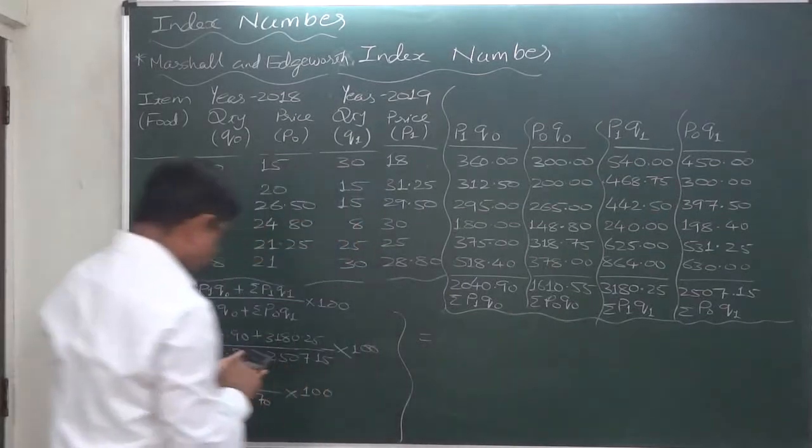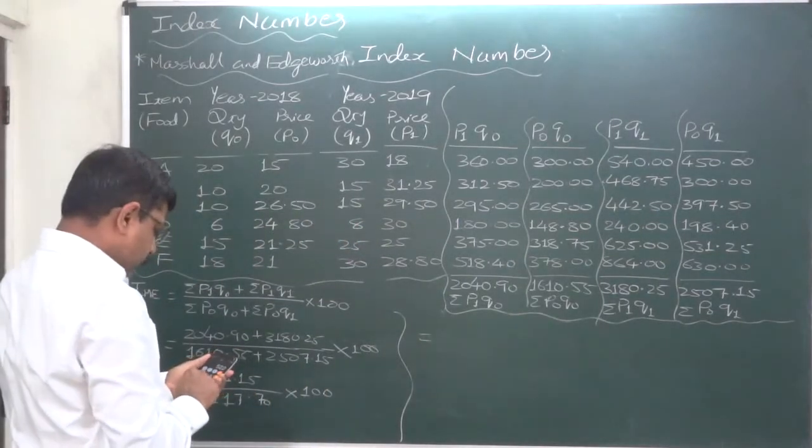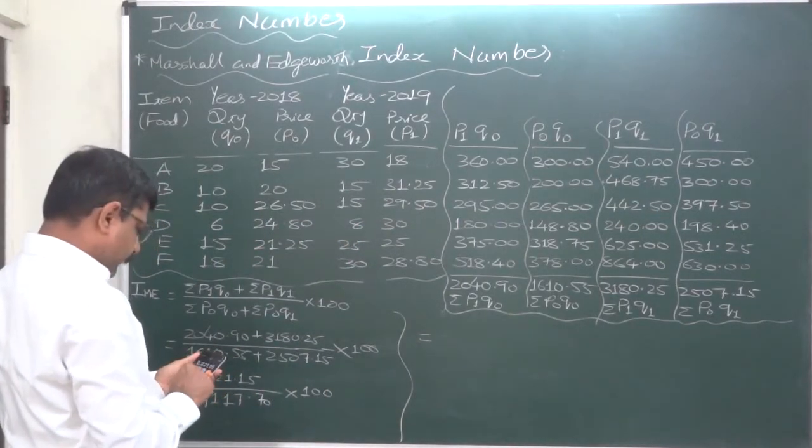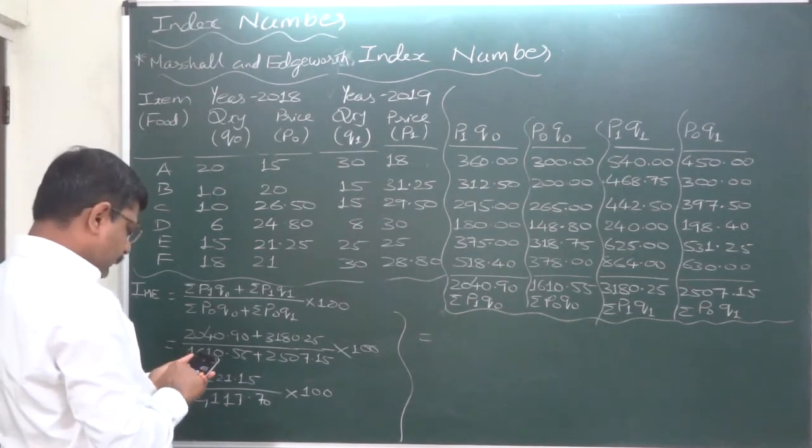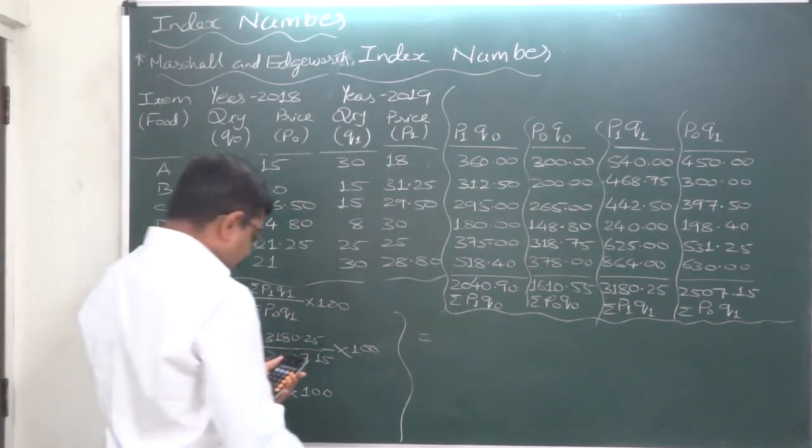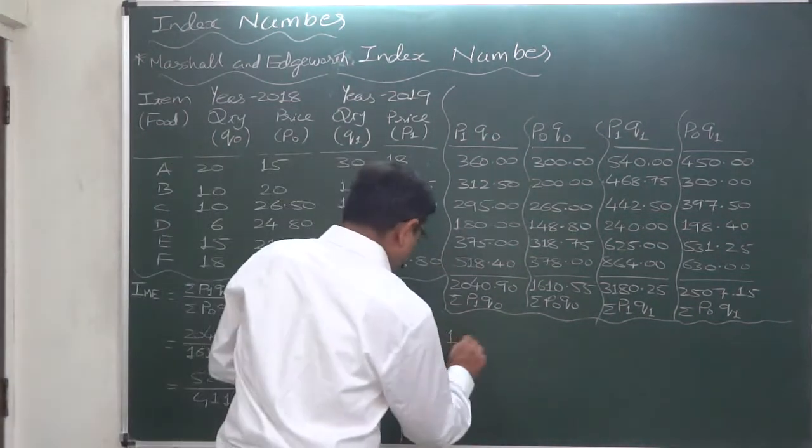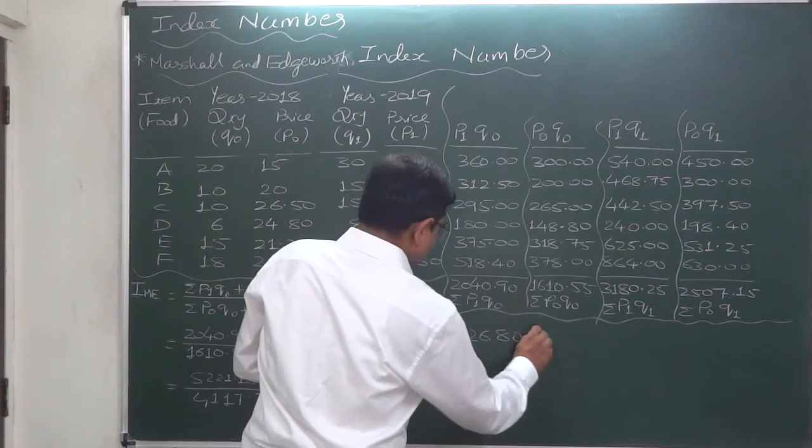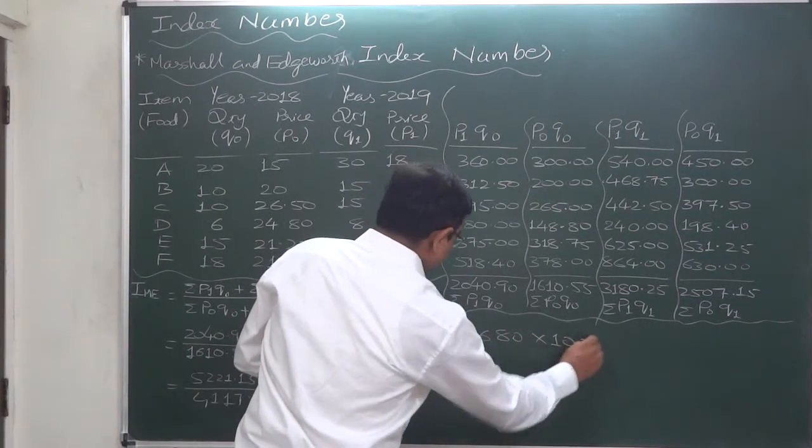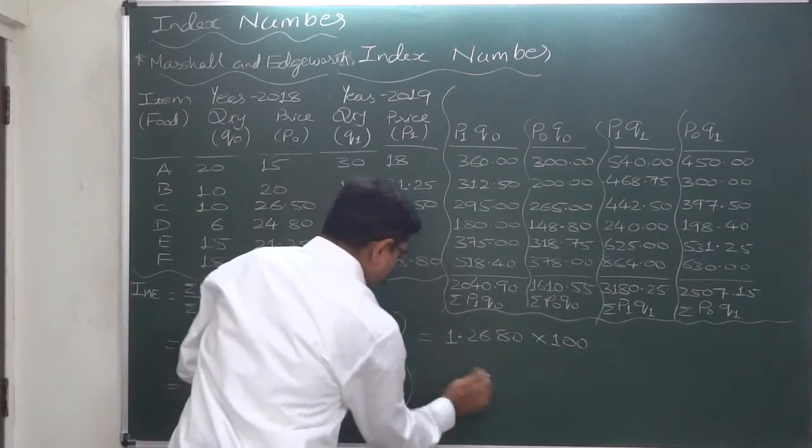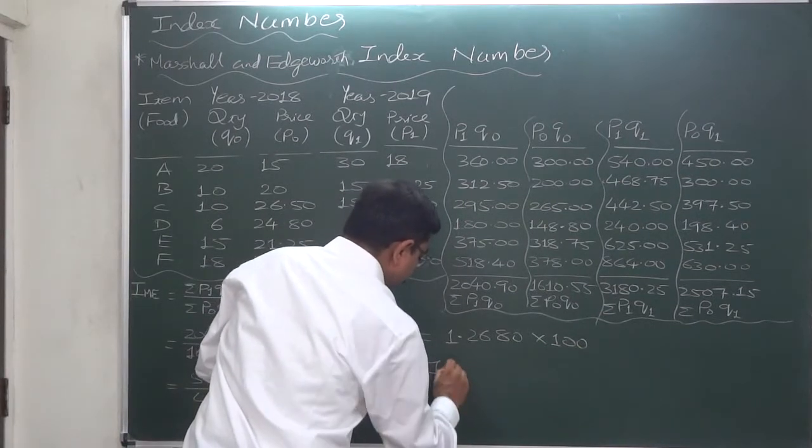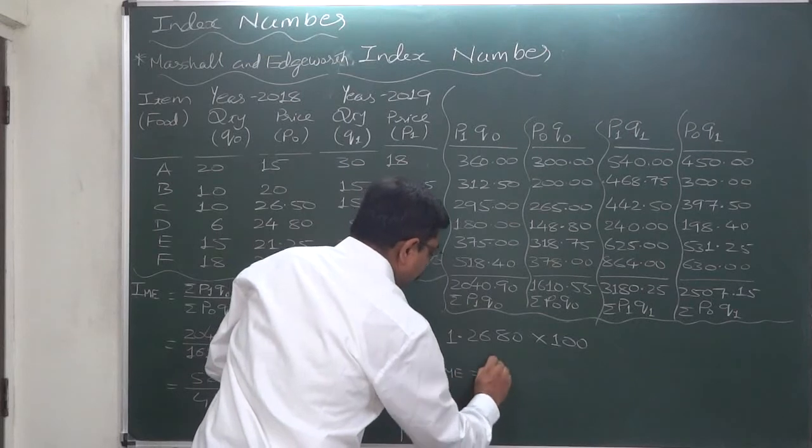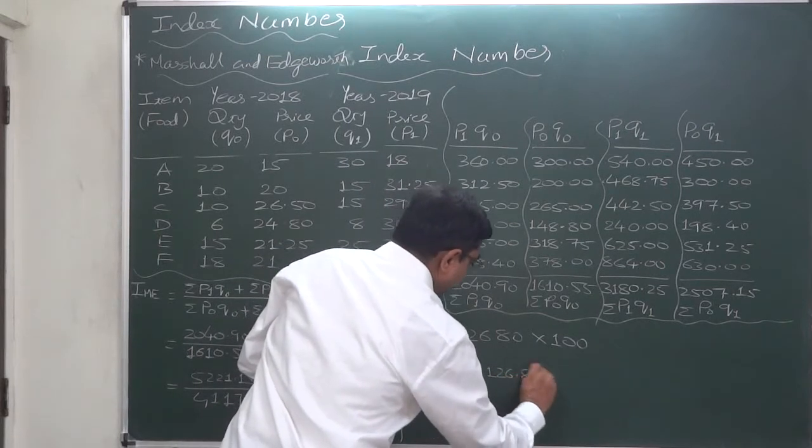It comes to 4117.7 and into 100. So it comes to 5221.15 divided by 4117.7. There are some drawbacks of using mobile calculator, but the biggest gain is it is always handy with us.